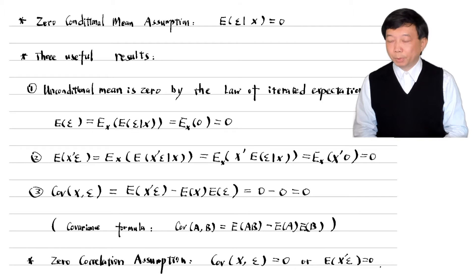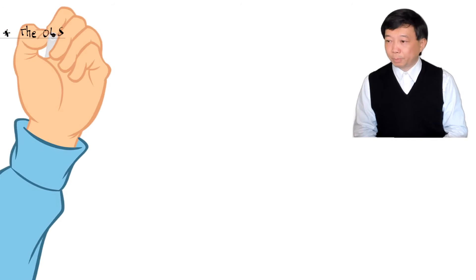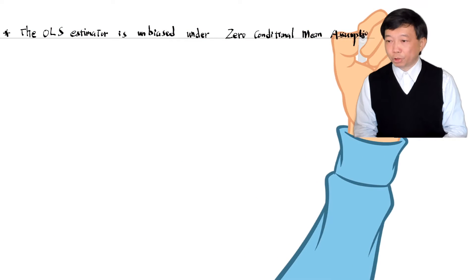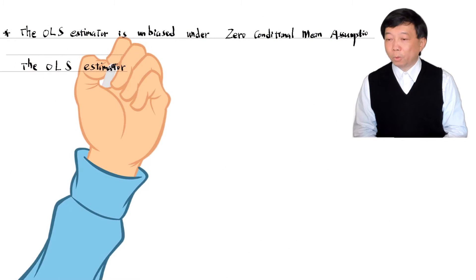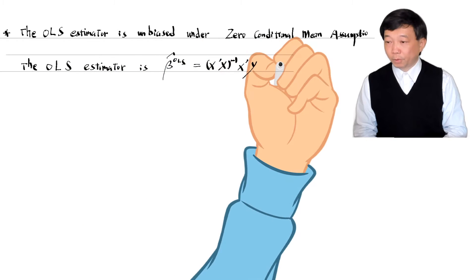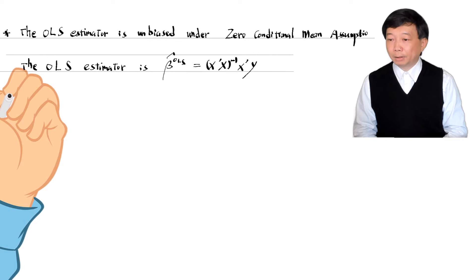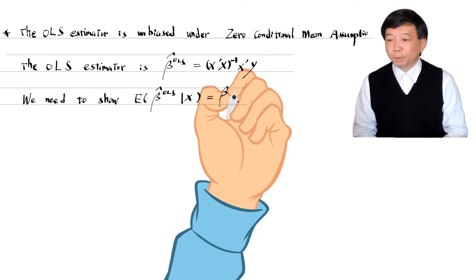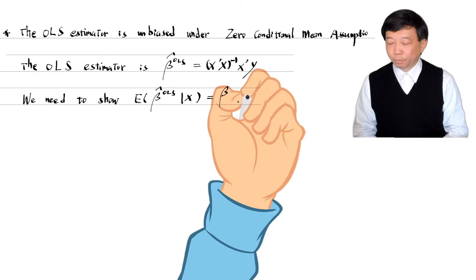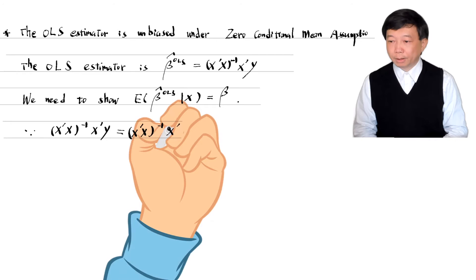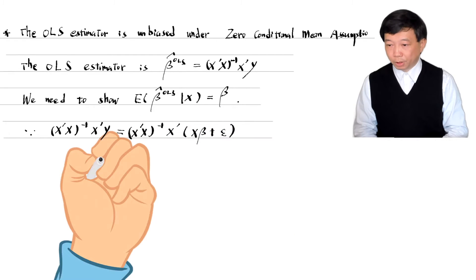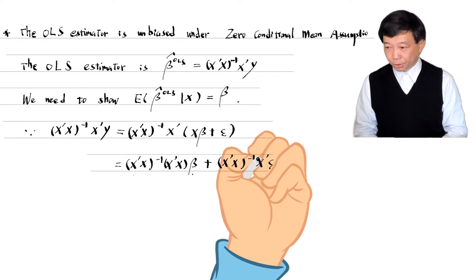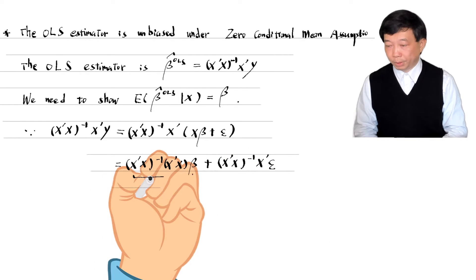Here is the proof for the unbiased OLS estimator under the zero conditional mean assumption. We write the OLS estimator in matrix form. To show it is an unbiased estimator for the population parameter, we need to prove that the expected value of beta-hat conditional on x equals the true parameter beta. We write out the outcome variable y and find that the first term is the parameter beta and the second term equals zero under the zero conditional mean assumption.